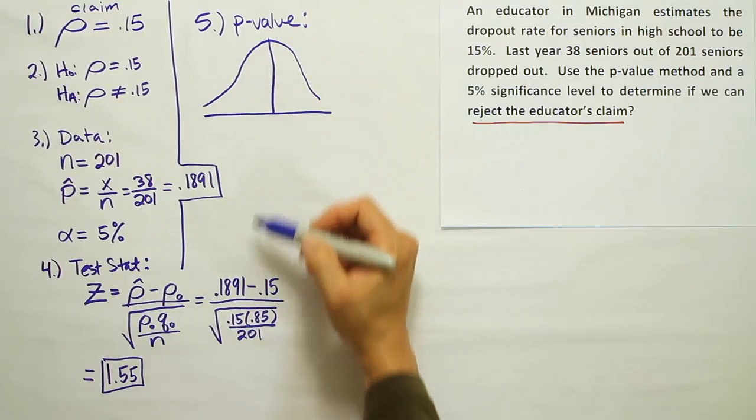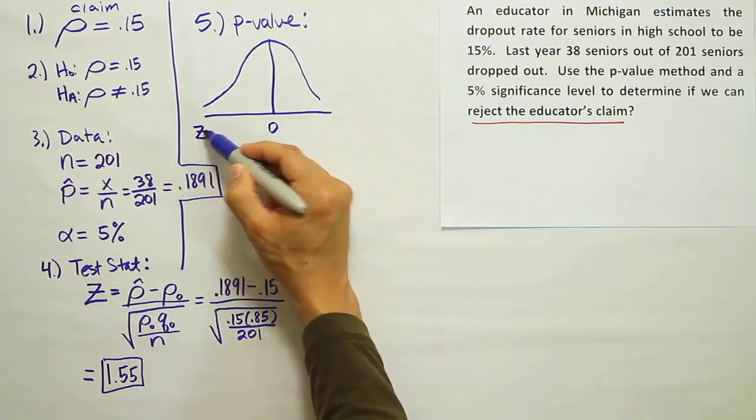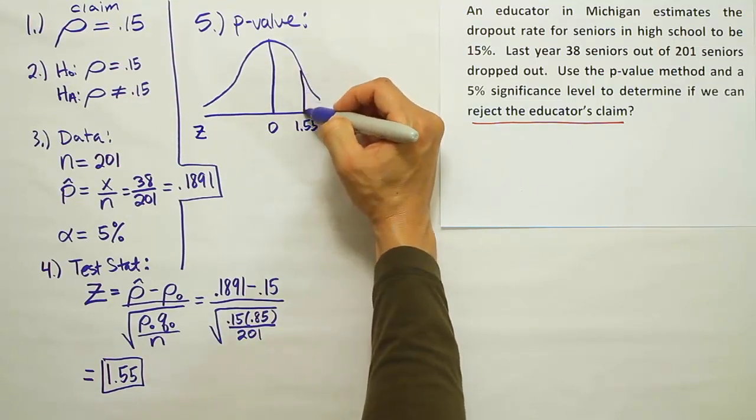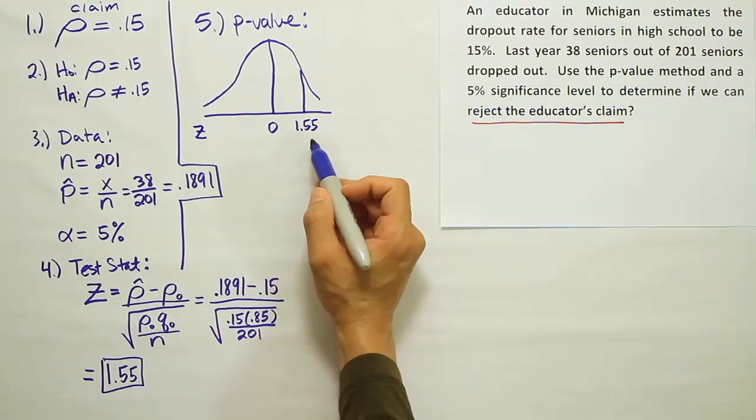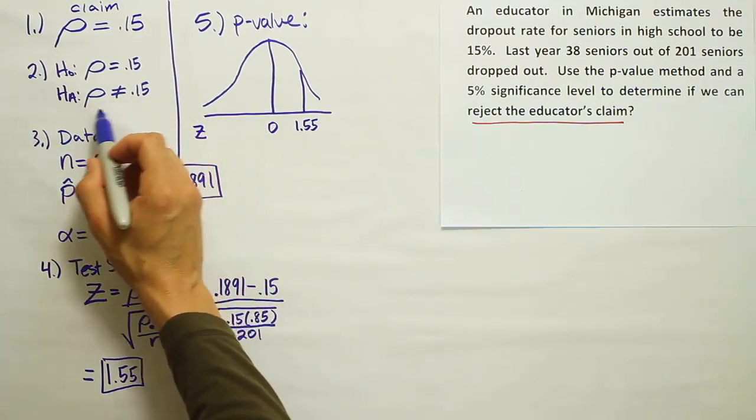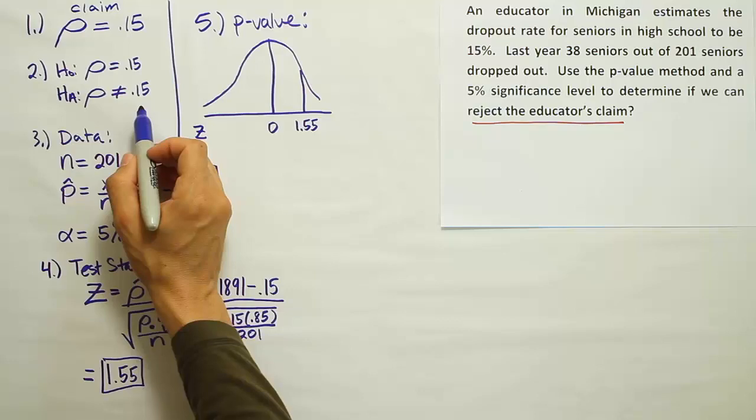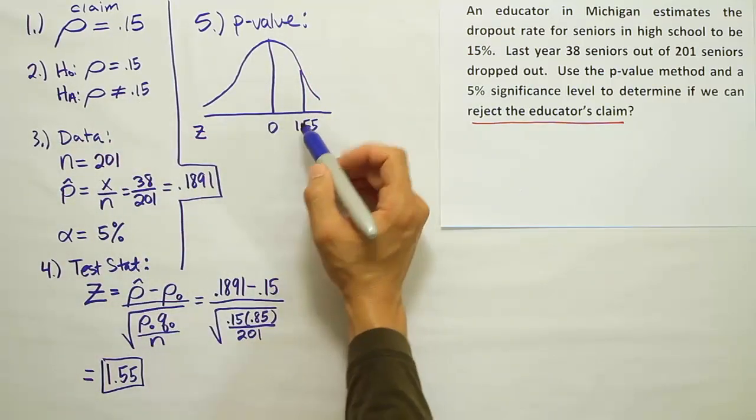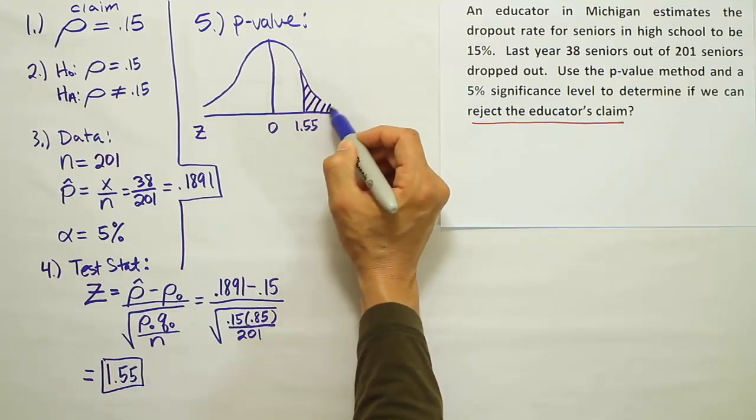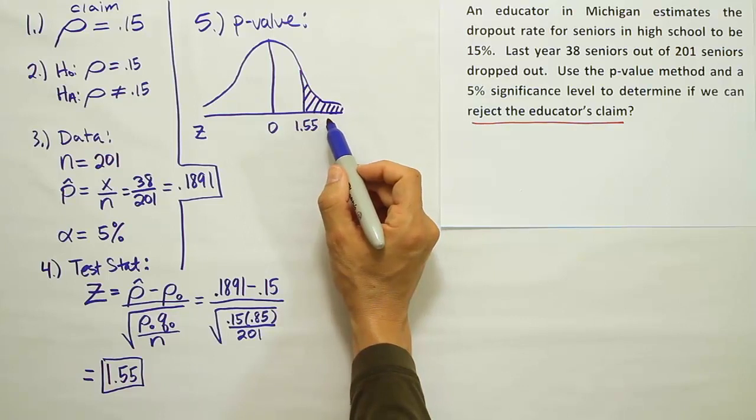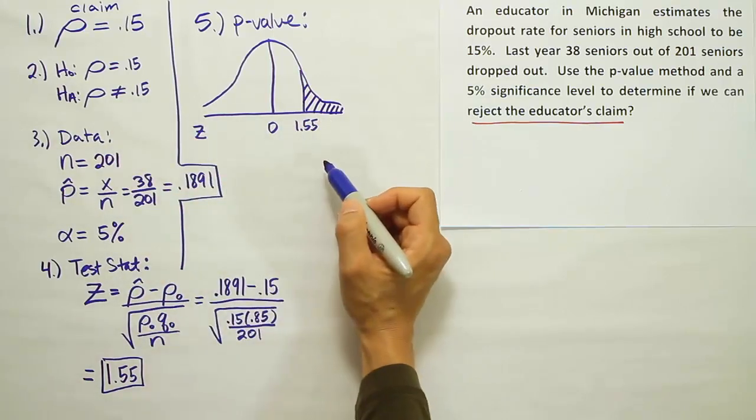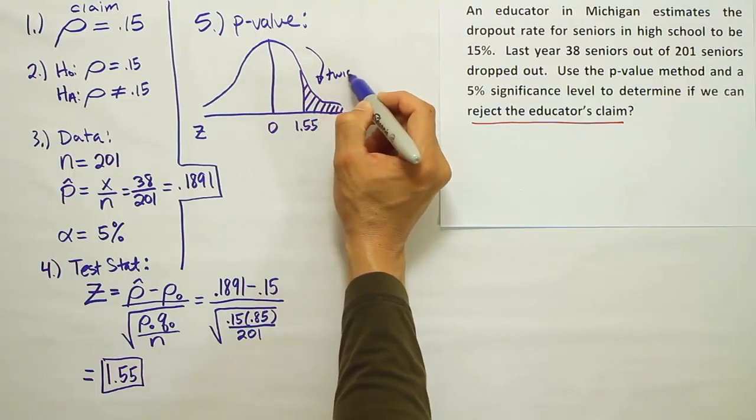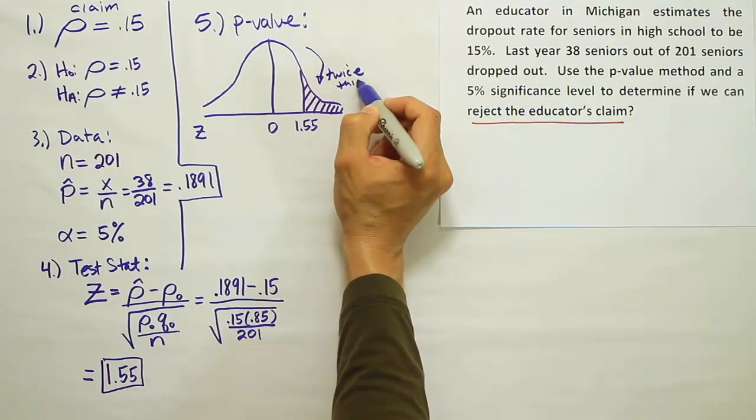And on that bell curve, we should label our test statistic. So our test stat is 1.55. That'll be to the right of 0, so I'm just going to put it there on the curve. Now what we do next is we look at our HA and determine what kind of test we're dealing with. In this case, it's a two-tailed test. So the rule for calculating the p-value when dealing with a two-tailed test is to find the tail area beyond the test stat, and then to multiply by 2 because it's a two-tailed test. So the p-value is going to be twice this area.